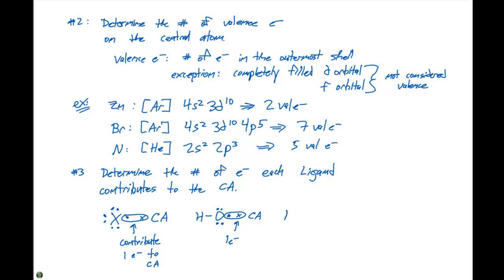A hydrogen is a fairly obvious example. It only has one electron, so it's going to contribute that one electron when it forms a covalent bond with our central atom.